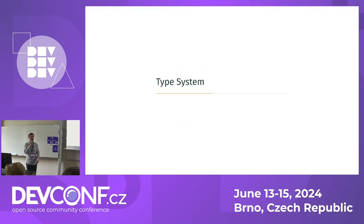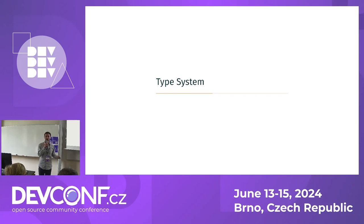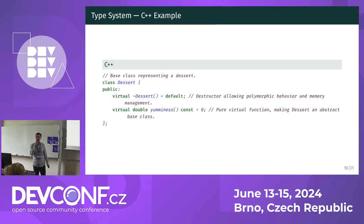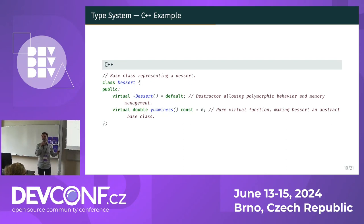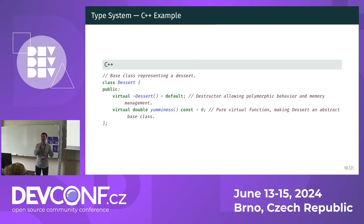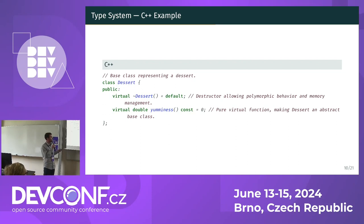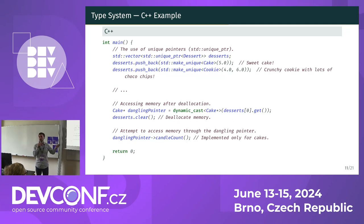Let's move to another cool part, which is Rust's type system. The C++ type system is powerful, but it has some limitations and potential problems compared to more modern languages like Rust. We will demonstrate this with an example involving different kinds of desserts and calculating their yumminess. The C++ code uses inheritance and polymorphism, which can lead to runtime errors if dynamic casts between the base class and derived classes fail. The base class implementation, called dessert, is shown on this slide. C++ type safety is less strict because type mismatches can occur at runtime, requiring virtual functions and dynamic casting to determine the type of dessert at runtime. In the main function, C++ requires explicit memory management using new and delete, as demonstrated by the use of unique pointers in the dessert declaration.